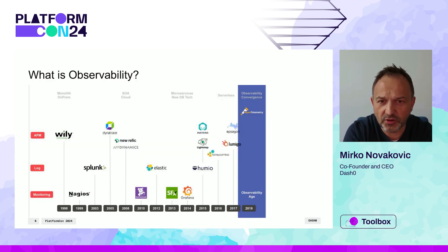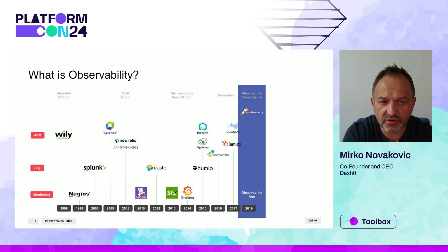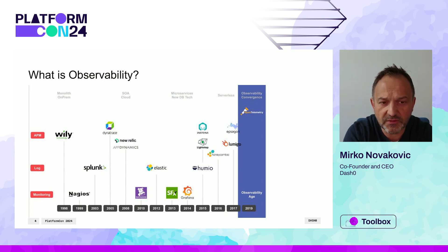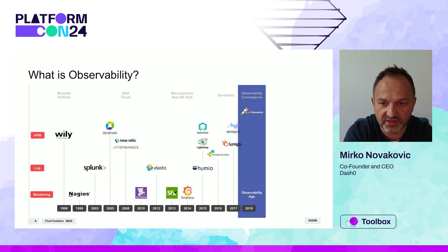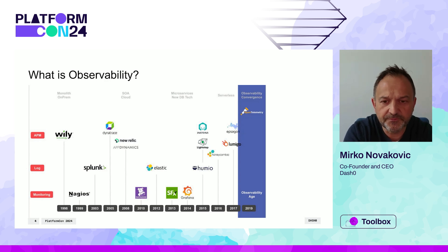So let's look at what observability is. It is a combination of different tools and maybe you have heard of a few of them. The categories we will look at are basically APM — application performance management — which is a tool that helps you understand what your application is doing, the flow through your application, the performance, and the errors that are happening. There's also a category called log management, basically introduced by Splunk at the beginning of the 2000s, where all the logs are sent to a central repository and you can slice, dice, and analyze them using a control plane.